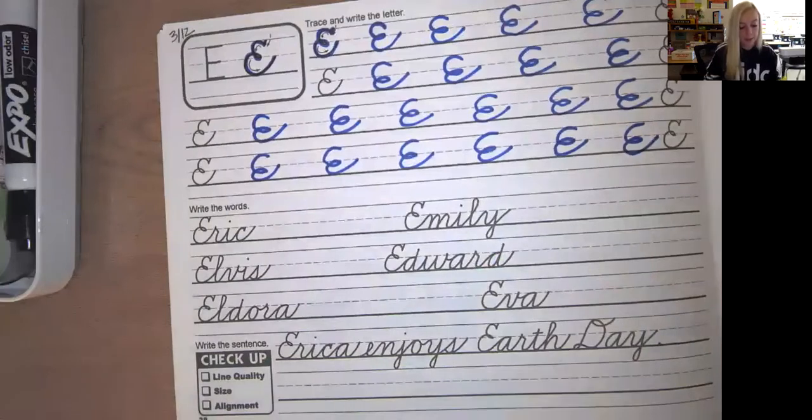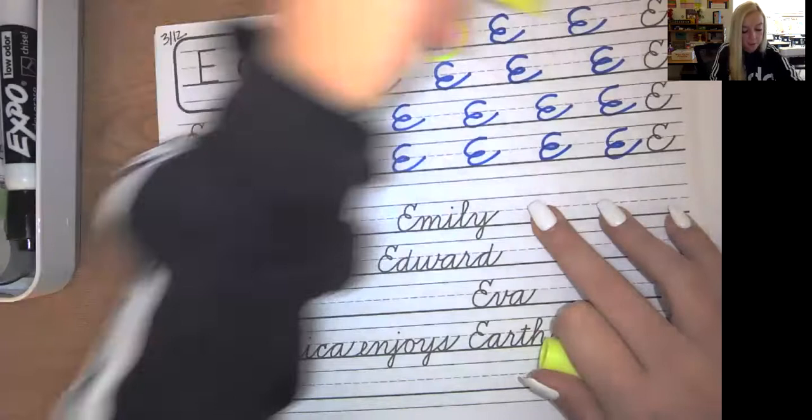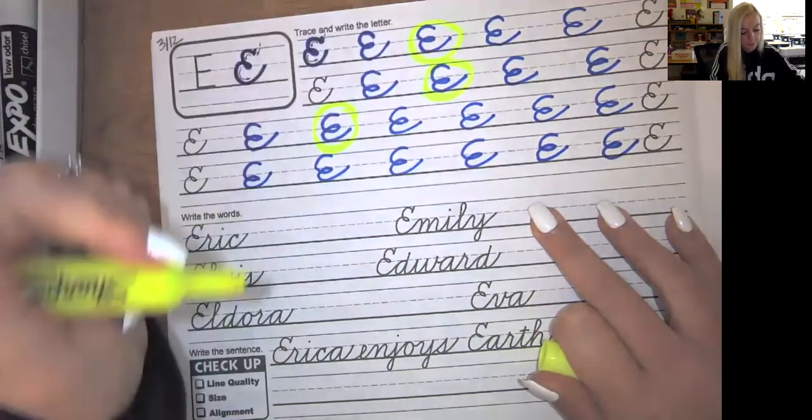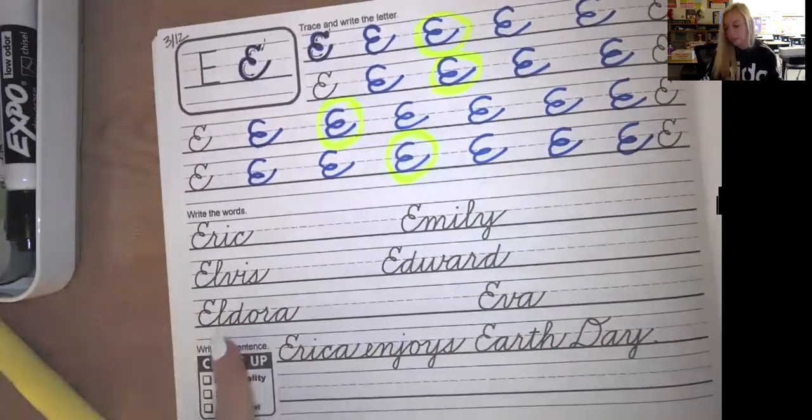Okay, now let's pull out our highlighters here. Circle your favorite one on each line. Which one are you the most proud of? I like that one. Looks good. I like that one. Okay, so now we have some proper noun names over here.